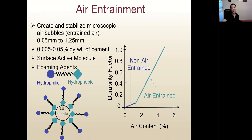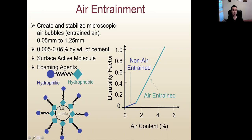The air-entraining agent molecule is a surface-active molecule that creates and stabilizes small air bubbles — we call that entrained air. The size of the air bubbles is very small: from 0.05 millimeters to around 1 millimeter. The dosage of air-entraining agent is very low. On the two ends of the molecule, we have a hydrophilic end, which likes water, and the other end is hydrophobic — it repels water. Because of the nature of the molecule, the air bubbles are generated and stabilized inside the concrete.